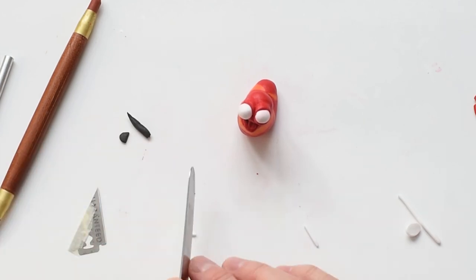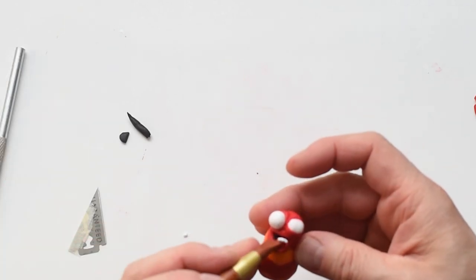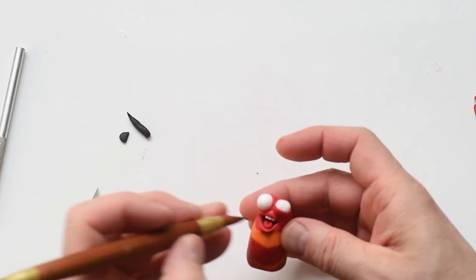I shape the lip and now it's time for the teeth. Roll a small piece of white and cut not all the way through. I cut four pieces and then just by using my tool I stick it in and attach it to the upper lip.